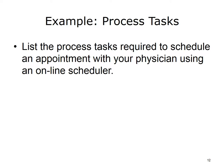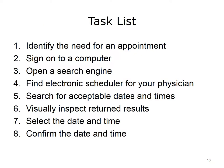Now we will look at an example. After these instructions, pause the slides and list the process tasks required to schedule an appointment with your physician using an online scheduler. Let's go through this example step by step. First, you must identify the need for an appointment, sign on to a computer, open a search engine, find an electronic scheduler for your physician, search for acceptable dates and times by visually inspecting results from the scheduler, select the date and time, and then confirm the date and time.